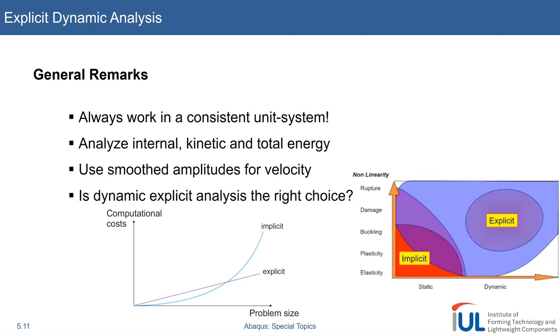And the choice between explicit dynamic and static implicit analysis really is a critical one. Because this can save you a lot of time or cost you a lot of time and money if you make the wrong decision. So it's important to understand the problem.